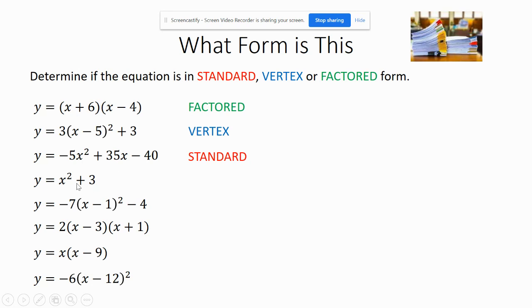This one's kind of tricky. I look at it. First off, I see standard, but you know what? It's also vertex form. It's both because there's just no parentheses, but they do have an h of zero. We'll figure that out here.